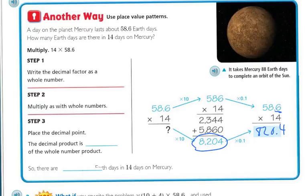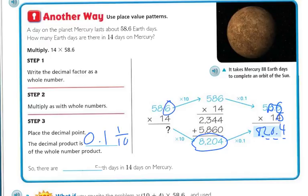If there were two decimal points, you'd count two spaces; if there were decimal points adding up to three spaces total, you'd move three spaces. In this particular case the decimal point is one place, giving one-tenth. So there are 820.4 Earth days in 14 days on Mercury.